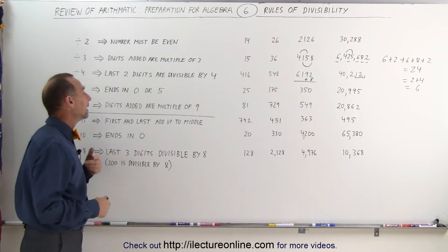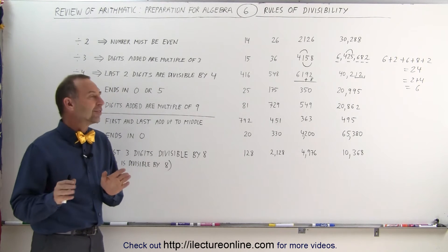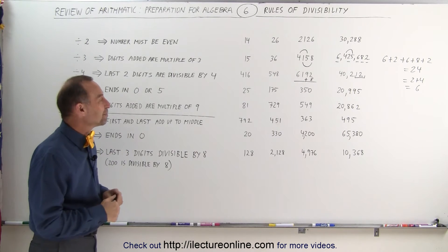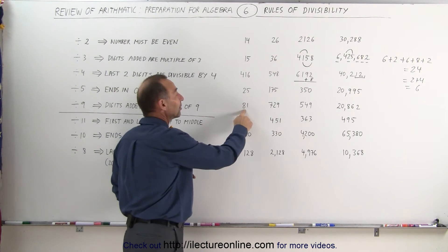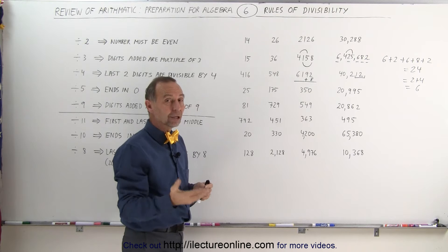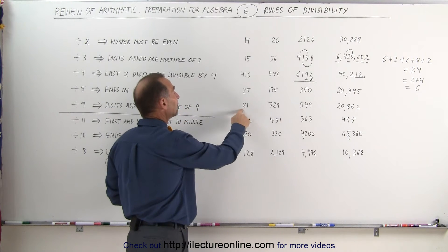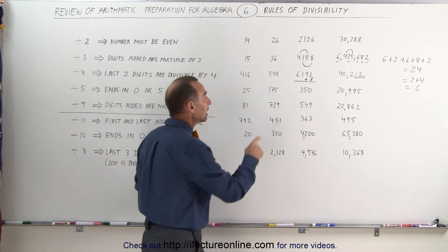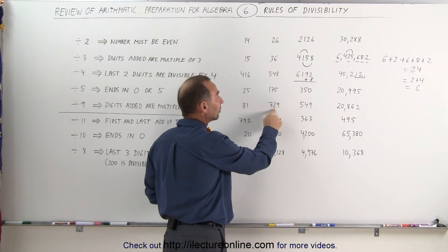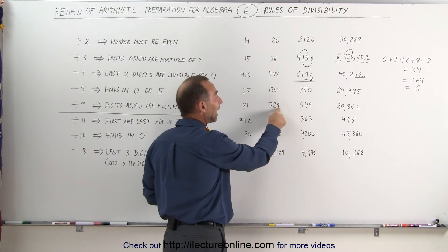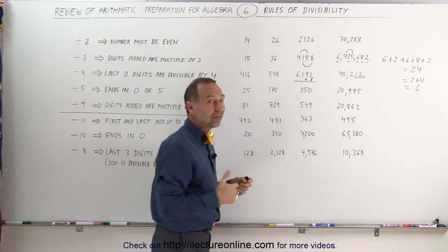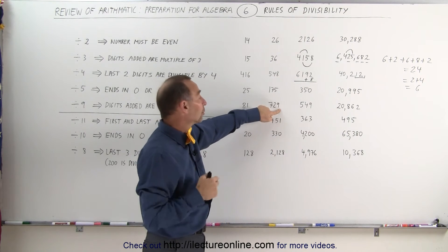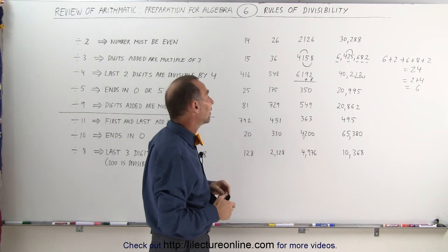How about divisibility by 9? The rule is similar to that for divisibility by 3. If we add the digits together and they add up to a multiple of 9, the whole number can be divided by 9. 8 plus 1 is 9, so we know 81 can be divided by 9. Here I can add 7 plus 2 together — that's 9 — and I have a 9 there. Since 7 plus 2 is 9 and 9 is 9, they both can be divided by 9, so the whole number can be divided by 9.